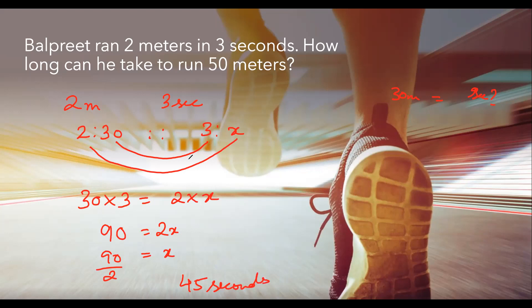So I hope you have understood this very simple question. To run 30 meters, 45 seconds are required. And we have used the concept of ratio and proportion. In ratio proportion, always remember that the unit must be same on each side of the ratio.